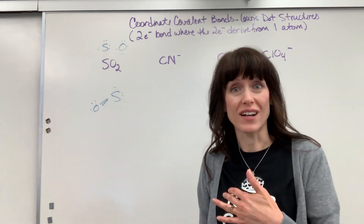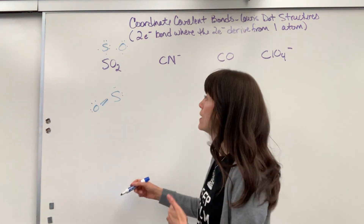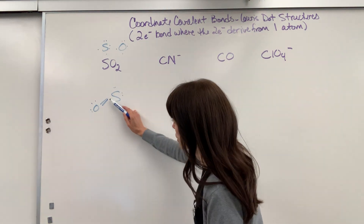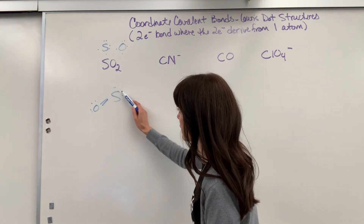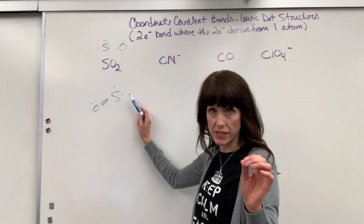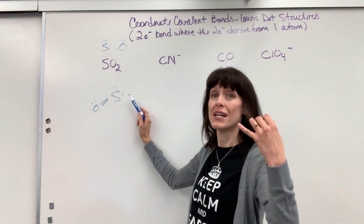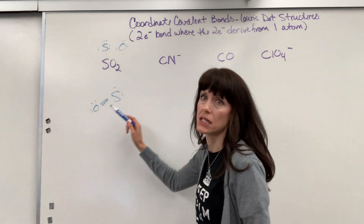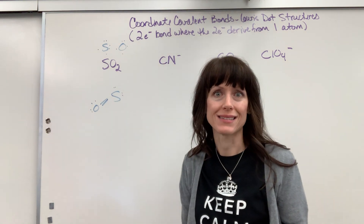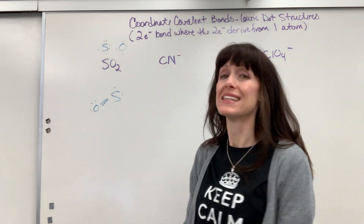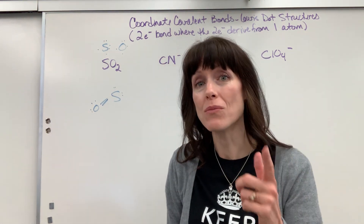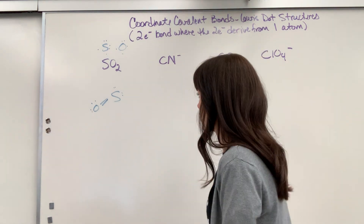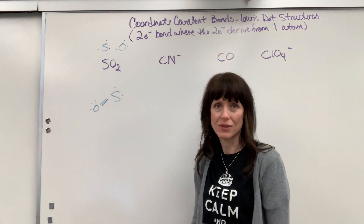Now here's the issue. Let's check the sulfur. Sulfur had six valence electrons; it shared one here and one there. By sharing, it now senses eight — we're at an octet. But I still have one more oxygen that has to share. How do we do this? That's where the coordinate covalent bond comes in.